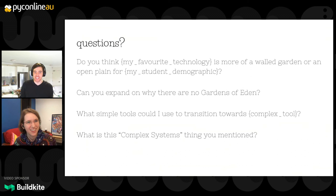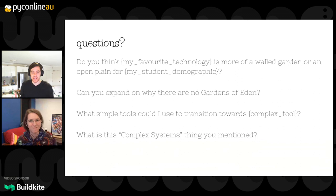Can you expand on why there are no Gardens of Eden? The thing is, the Gardens of Eden are at different levels, but there's no universal Garden of Eden — because as soon as you create that Garden of Eden, you make it so that you can actually solve harder problems than you would have expected before.